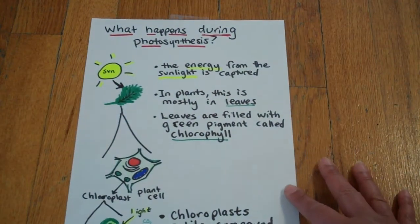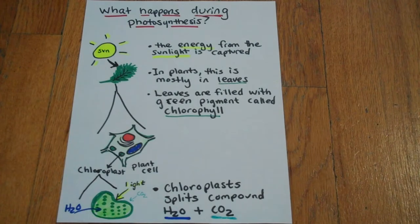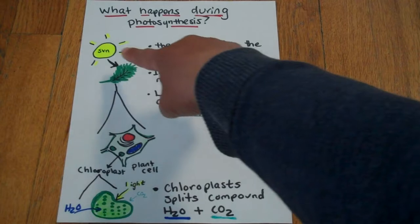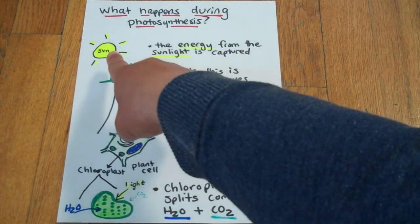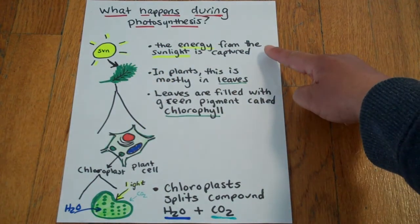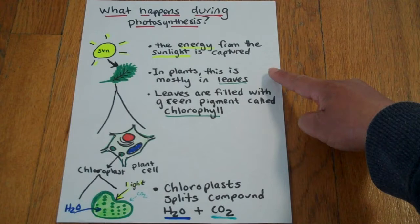So what is happening for energy to be converted? What happens during photosynthesis? The sun is the start of the food chain. The energy from sunlight is captured. In most plants, this is mostly in leaves.